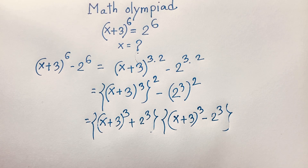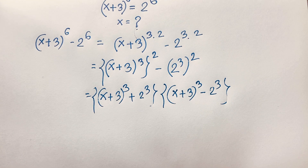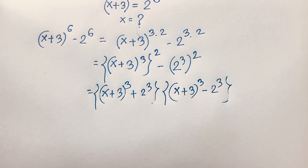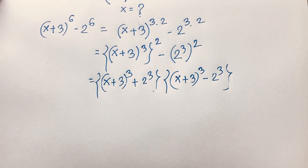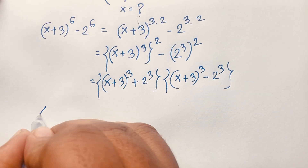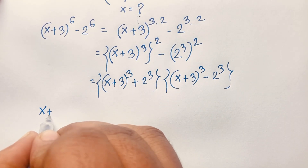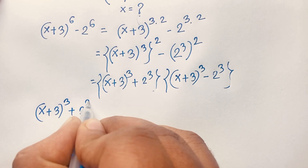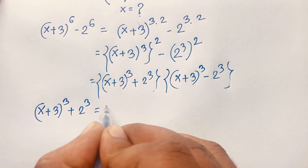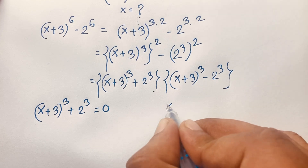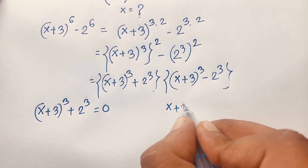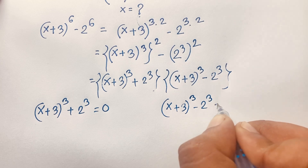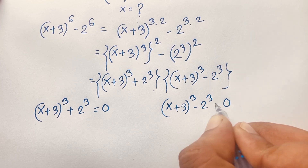So we are finding two cases. Our first case is equal to 0 and the other case is equal to 0. Our first case: (x+3)³ + 2³ = 0. And the other case: (x+3)³ − 2³ = 0.